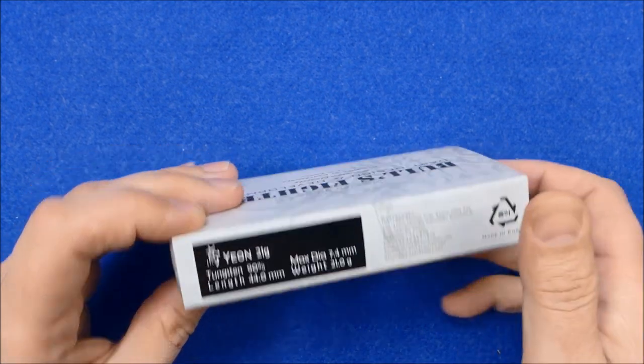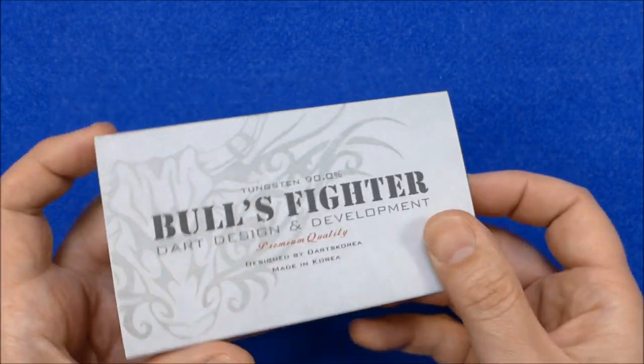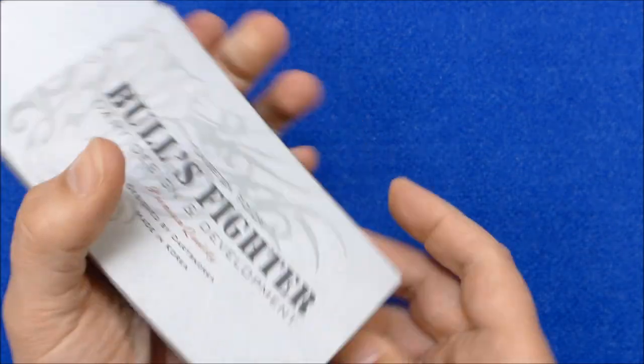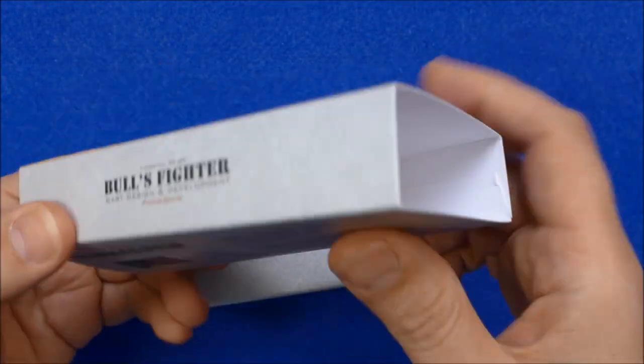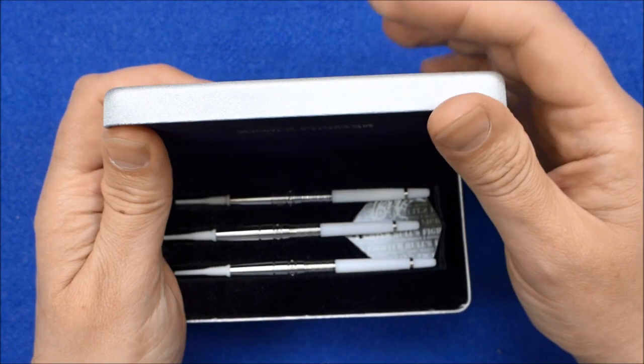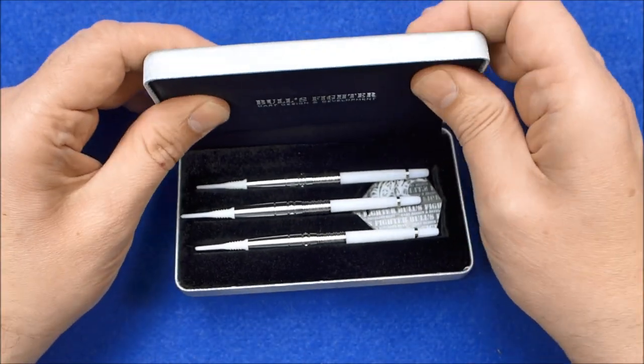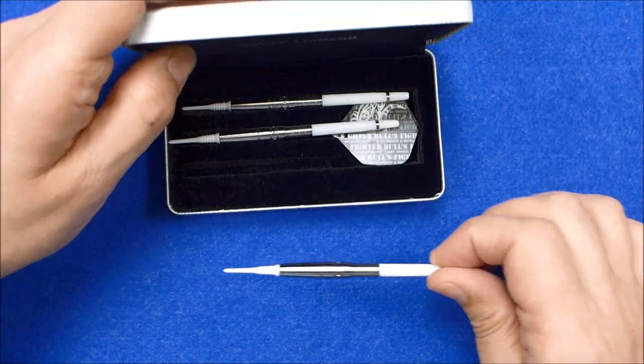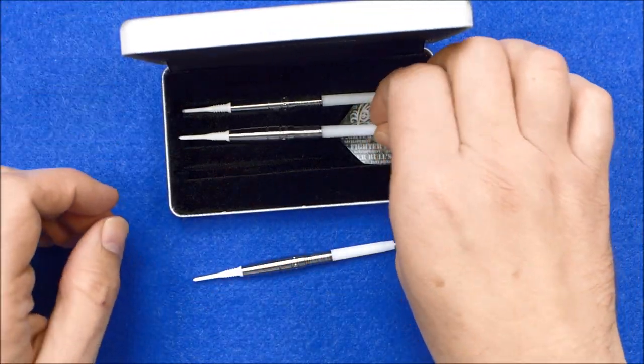90% tungsten dart and they come in the Bulls quite fancy packaging which has got this cardboard sleeve on the outer and then this metal case with a very plush interior and a velvety bottom where the darts are located.